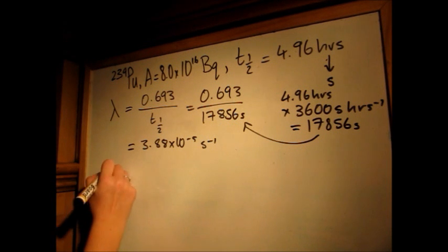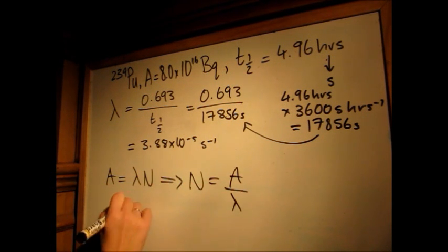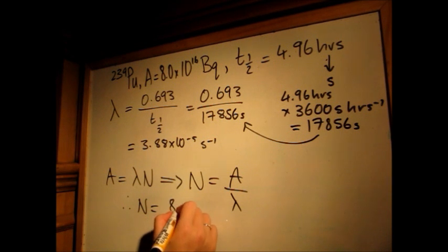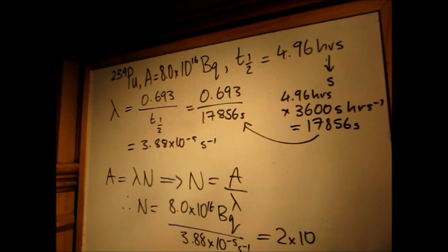The activity is equal to the decay constant times the number of atoms. Rearranging this gives that the number of atoms is the activity over the decay constant. Putting these values in, we get 2.0 times 10^21 atoms.